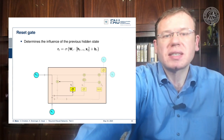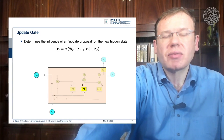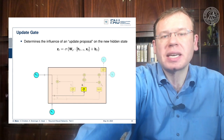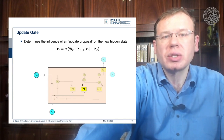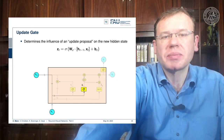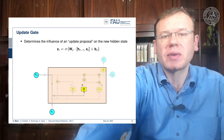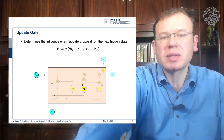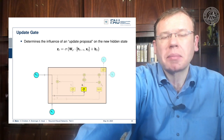Next we produce z_t, which is essentially the update proposal on the new hidden state. This is again produced by a sigmoid function where we concatenate the last hidden state and the input vector, multiply it with a matrix W_z, and add some bias.